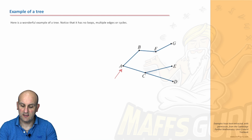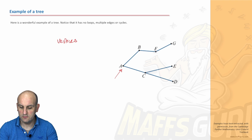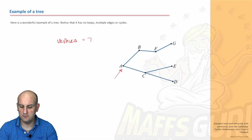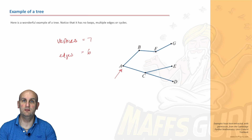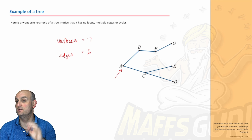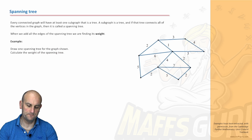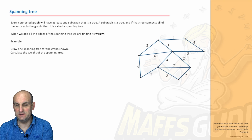Let's count the vertices: one, two, three, four, five, six, seven — there are seven vertices. And there are six edges. That's going to be really important later, because when we have one less edge than vertices, it becomes significant. This leads us to the idea of a spanning tree.